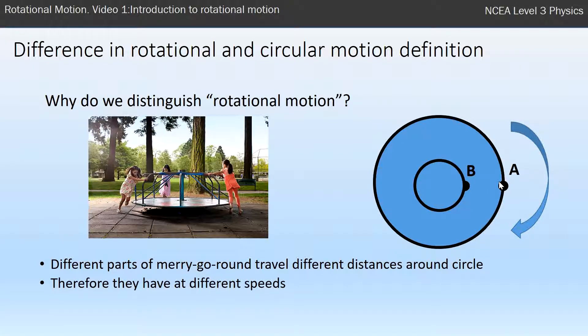So within the same merry-go-round as it spins, different parts are traveling at different speeds, and you think about every single atom within this merry-go-round is probably traveling at a different speed than every other atom. So that becomes very difficult to try and think of and deal with.